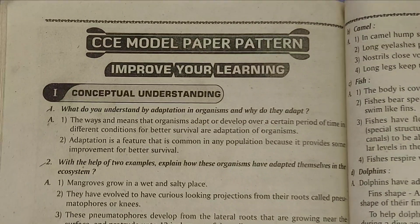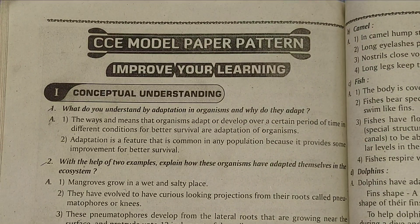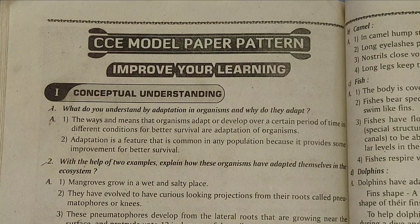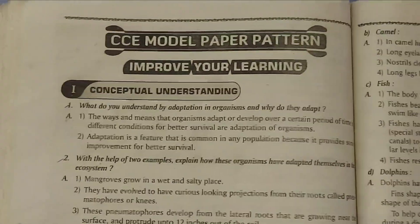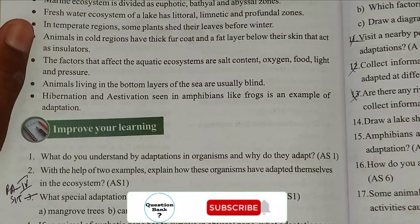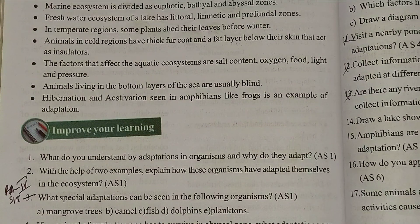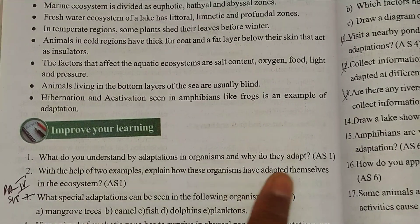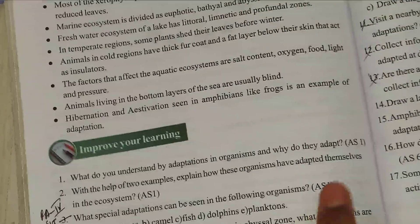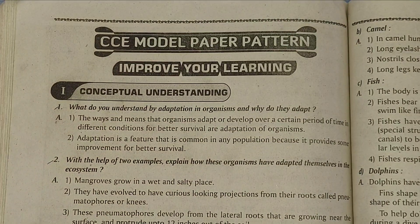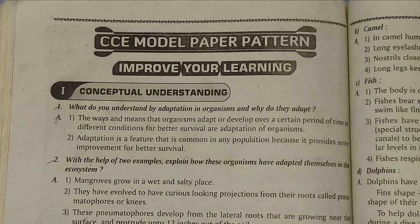Now let's see the CCE model paper. First question — you are learning concept understanding. You can see the same questions in the test book as in my guide — that is proof. Now I'll see the first question answer in the question bank. Link in the description for all questions and photos — go and check out from there if you want to see photos also.